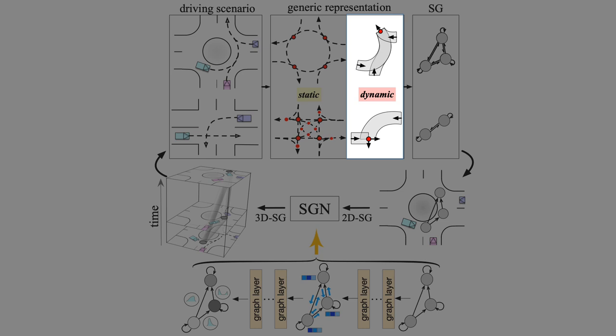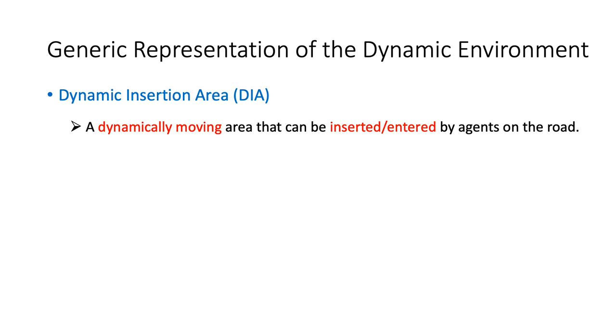Now let's see how we extract generic representation of the dynamic environment. In fact, the dynamic environment representation is based on the concept of dynamic insertion area, or DIA, that we proposed. It is defined as dynamically moving area that can be inserted or entered by agents on the road. It usually has four boundaries.